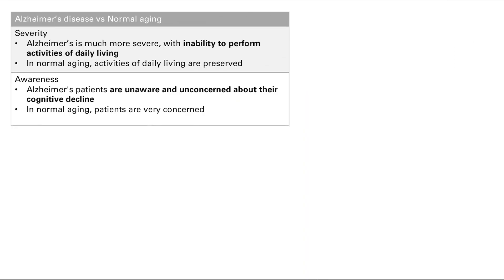These patients present with memory loss first. Normal aging can also present with memory loss, so the question is: what is normal aging versus Alzheimer's disease? The difference in severity is that Alzheimer's is much more severe — patients lose their ability to perform activities of daily living. In normal aging, there is some memory loss but activities of daily living are preserved. The second difference is awareness: Alzheimer's patients are unaware and unconcerned about their cognitive decline, whereas patients with normal aging are actually concerned and aware of the changes happening.